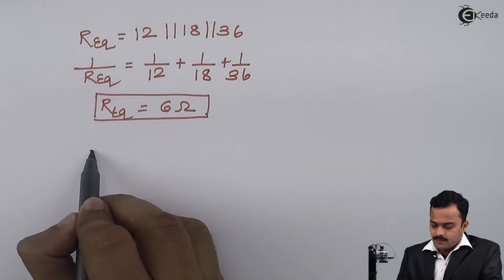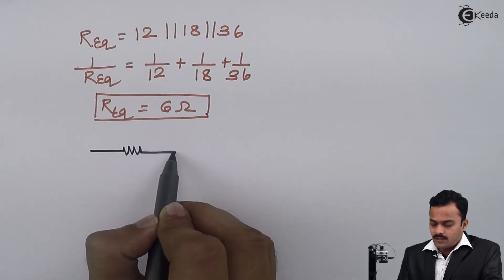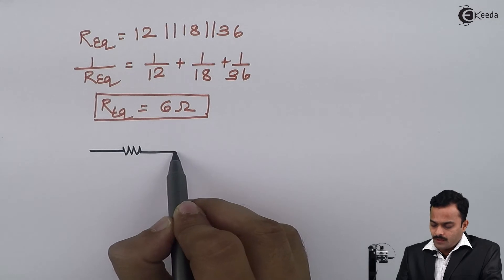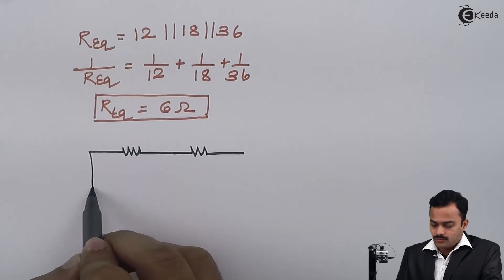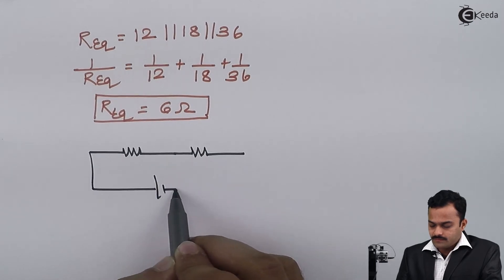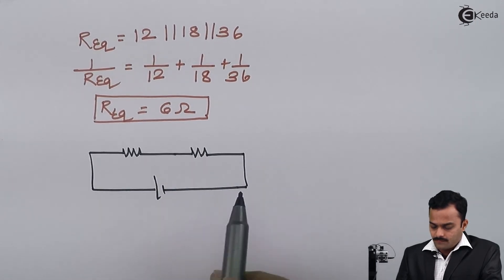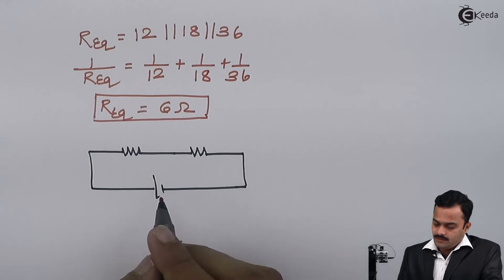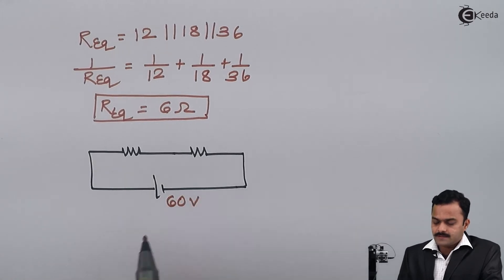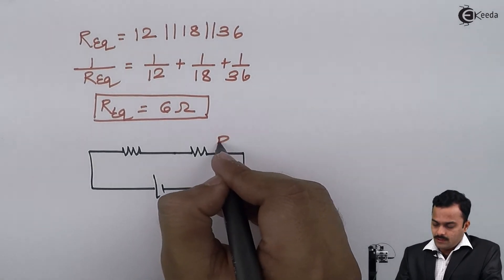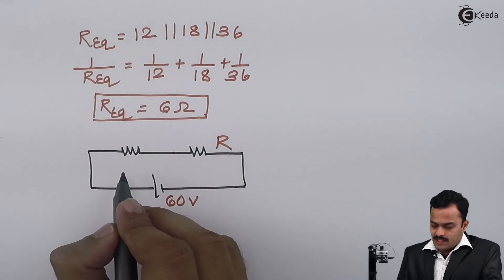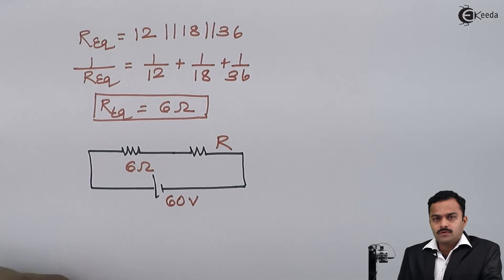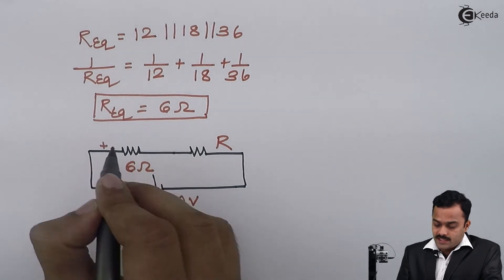After solving this, I get R equivalent as 6 ohms. The circuit will be reduced like this: I have one R equivalent of 6 ohms and another resistor which is unknown, connected to the battery of 60 volts.